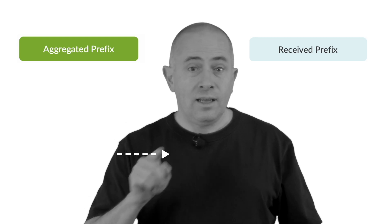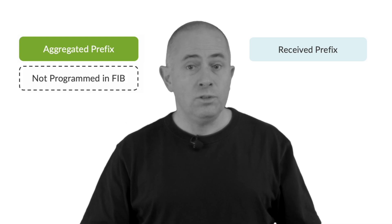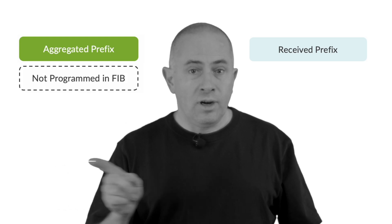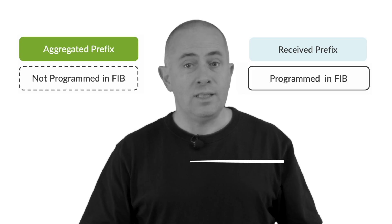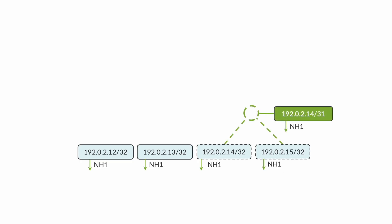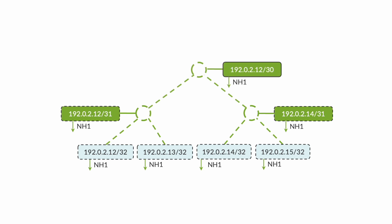In these diagrams, the blue color represents the routes received from the RIB — whether direct, static, or advertised via a dynamic protocol. In green, we have the computed aggregated routes. A dotted line means it's not installed, and a solid line represents what is programmed in hardware. So you can see I aggregated and only programmed 192.0.2.12/30.